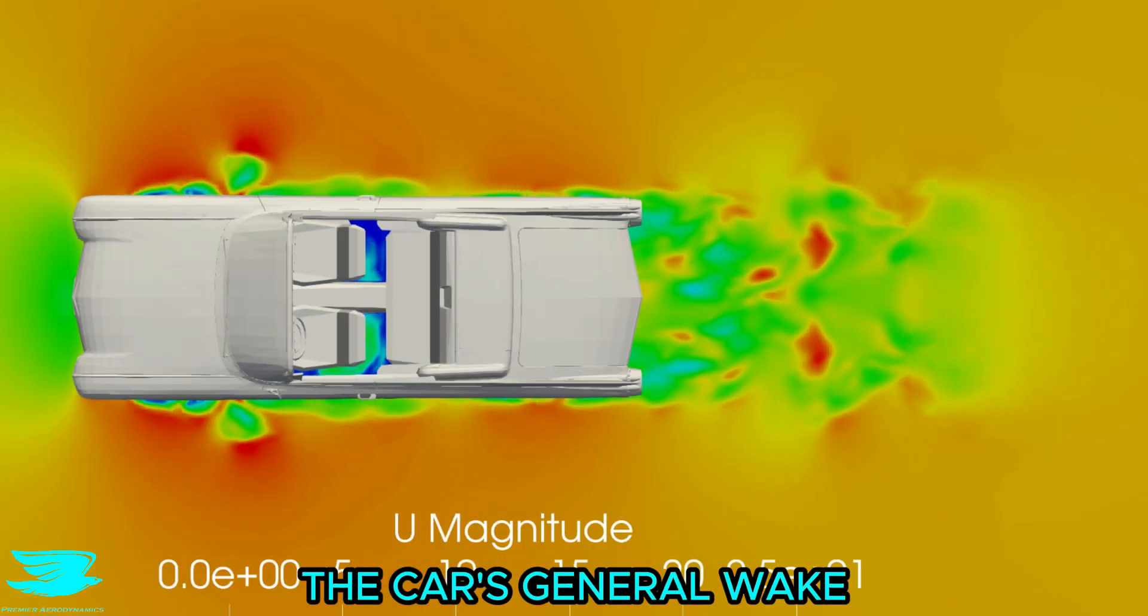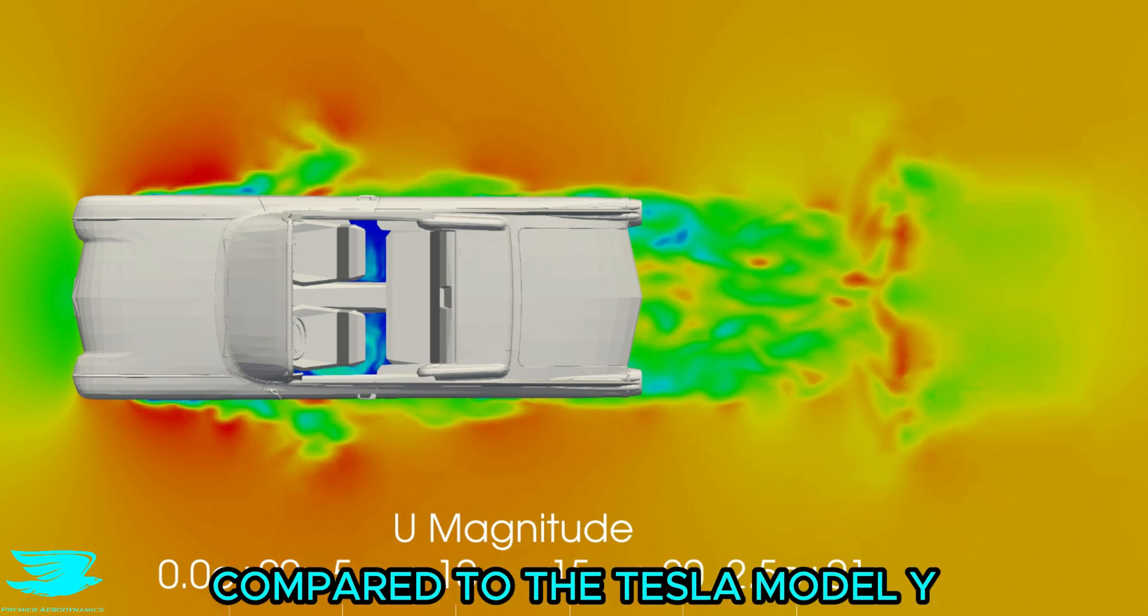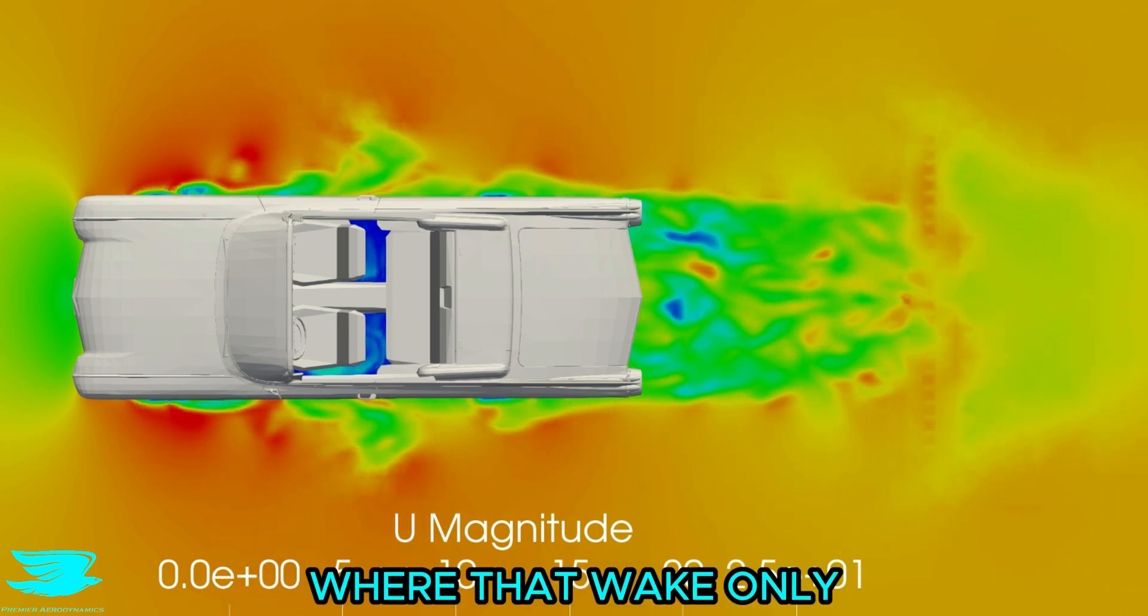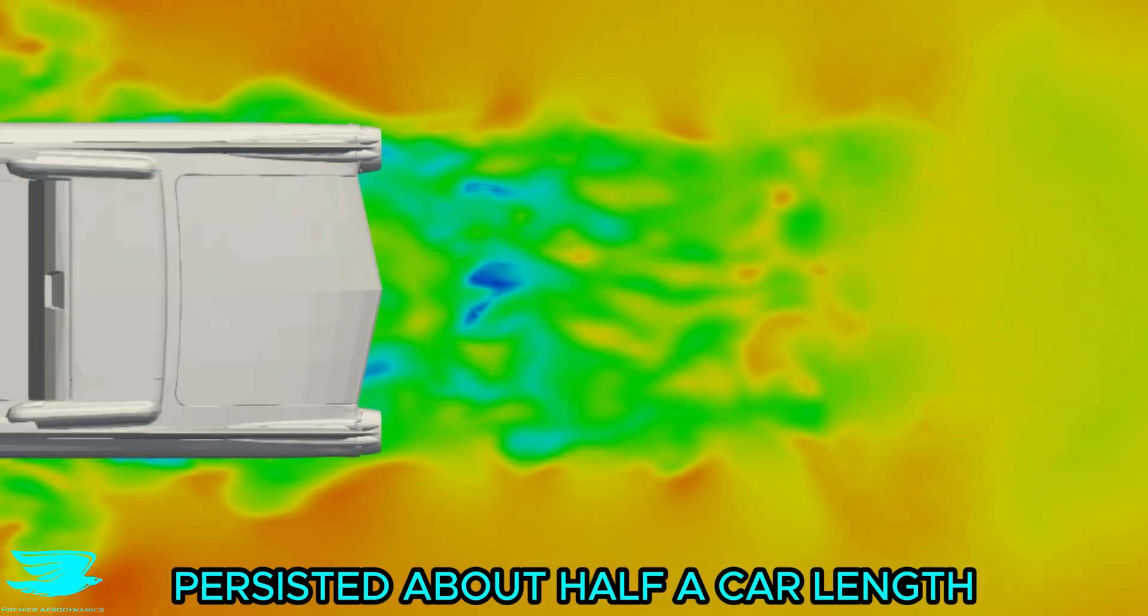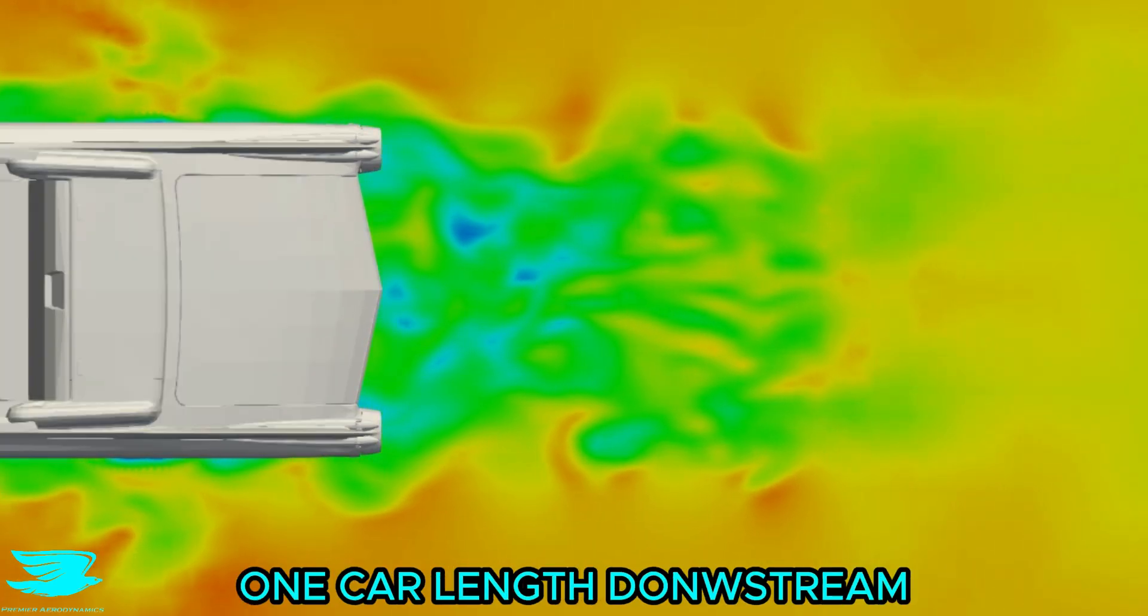The car's general wake also persists quite a lot downstream. Compared to the Tesla Model Y that we did a couple weeks ago, where that wake only persisted about half a car length downstream, this wake persists about one car length downstream.